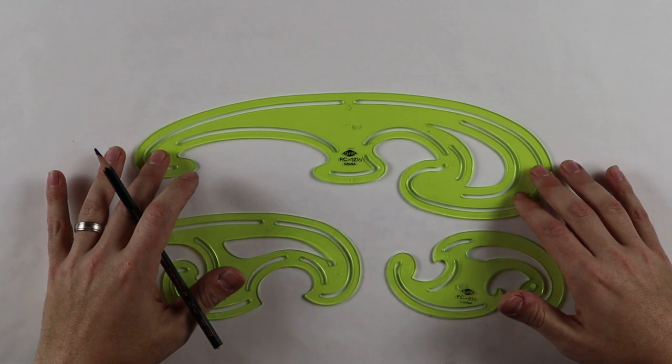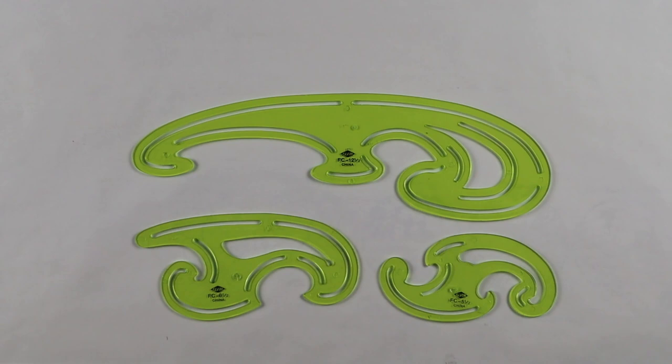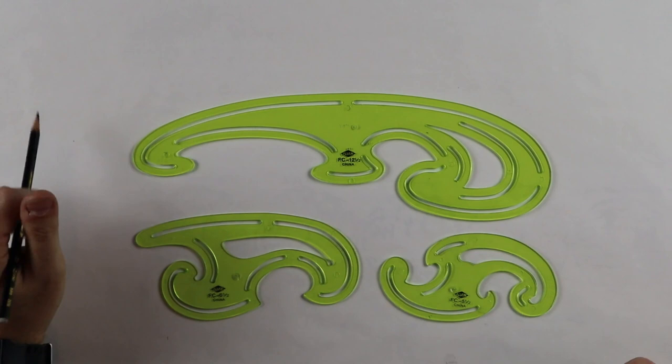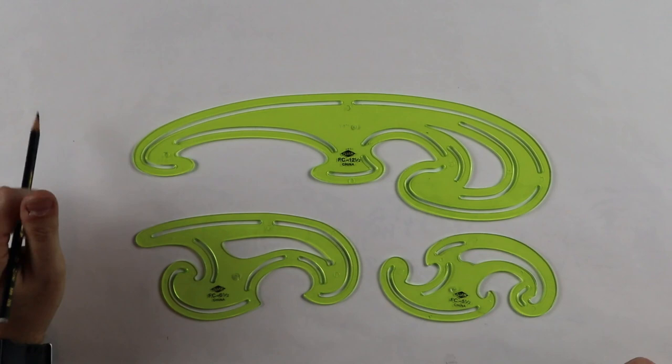Okay, so I have my French curve set here. This is just a set of three. You can get sets of eight to twelve. They really run the gamut. They have all different shapes and sizes. I have a twelve and a half, a six and a half, and a five and a half inch right here, just a small set from Alvin. I'll link in the description below what I'm using.